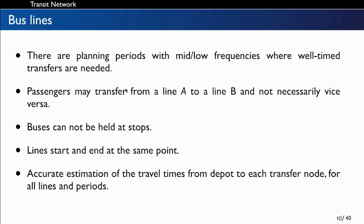We also assume that buses cannot be held at any stops. We have circular lines, meaning all bus lines start and end at the same depot. The most important assumption about bus lines is that an accurate estimation of travel times can be computed, making it possible to estimate the arrival time for each trip at each transfer node. This is the most important assumption of our solution approach.